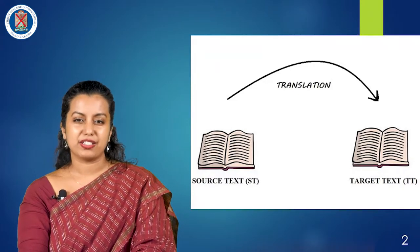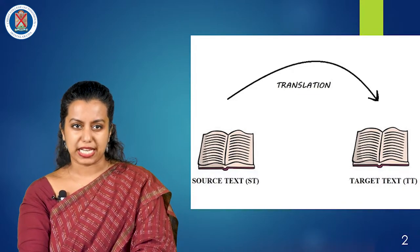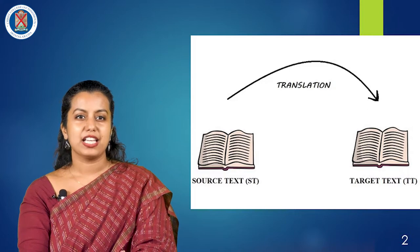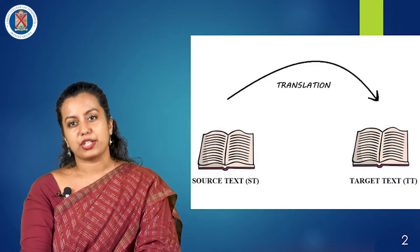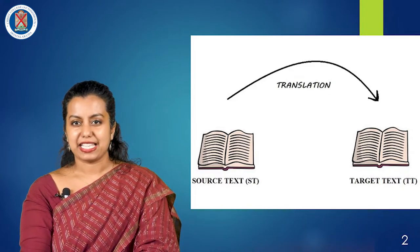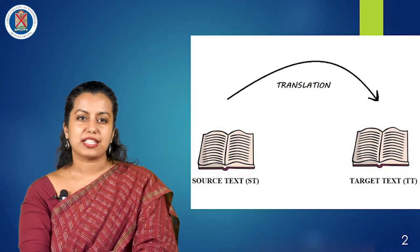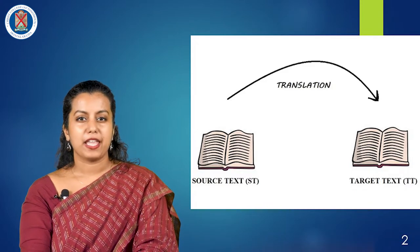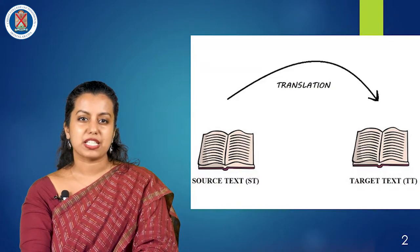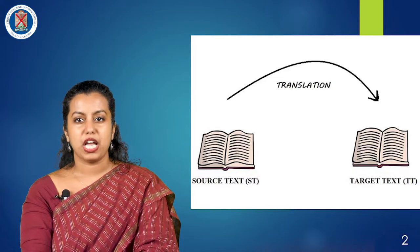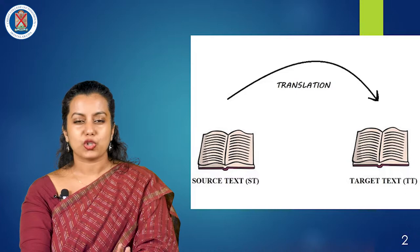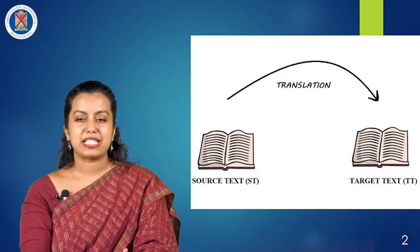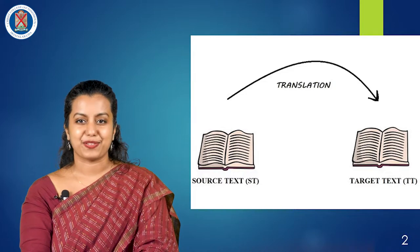Translation involves the rendering of a source language (SL) text into the target language (TL) so as to ensure that the surface meaning of the two will be approximately similar and the structures of the SL will be preserved as closely as possible, but not so closely that the TL structures will be seriously distorted. So this is pretty much what we do in translation.